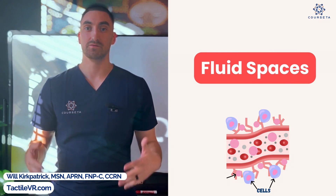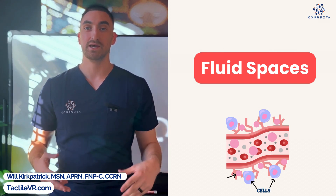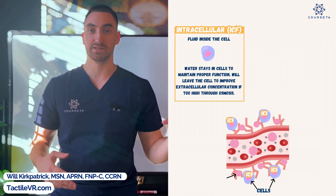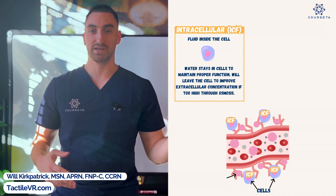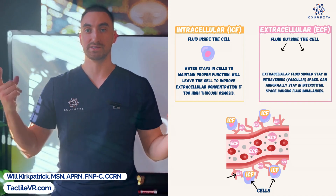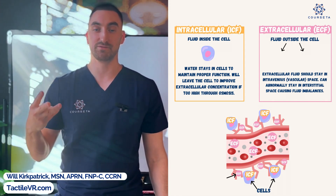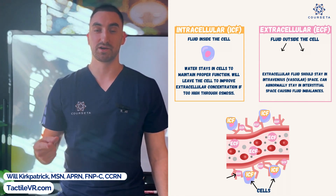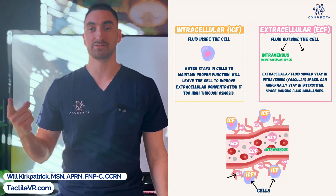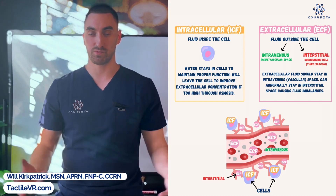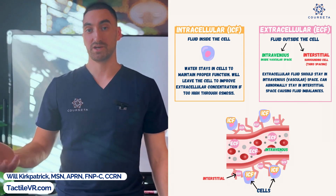When we talk about these IV fluids, it's always related to what it's doing to the cells in our body. First things first, we need to know about fluid spaces. There are two types. We have intracellular fluid — intra means inside, so the fluid stays inside the cell. And then we have extracellular fluid, so the fluid is outside the cell. Extracellular includes intravenous — what's actually in our veins and vascular system — and interstitial, which is the fluid surrounding the cell itself.